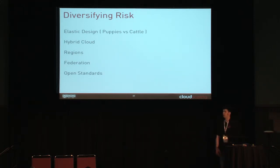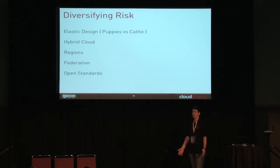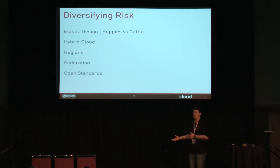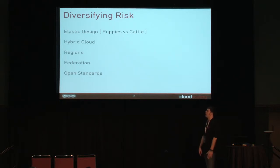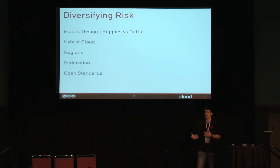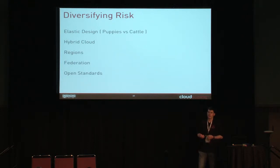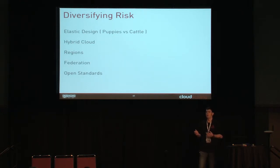Diversifying risk is what OpenStack does really well — this is one of those selling points you can bring home and say: cloud computing is designed for diversifying risk. We've all heard about the puppies and the cows. When you start treating things like cows, you don't care that much about them — what you're really doing is saying, I'm accepting the risk but I'm pushing it across many things, and it becomes less overall risk. The open standards, the federation, the regions, the hybrid cloud models are all designed to solve potential risk factors, including security risk factors. Things like hybrid hypervisor models — all key selling points.